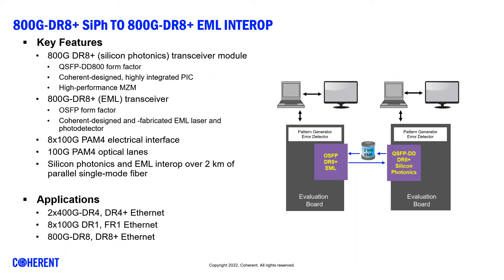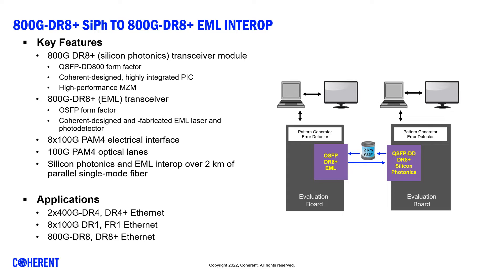This video showcases a live technology interop demonstration of 800G pluggable transceiver modules. The emergence of 800G modules based on eight lanes of 100G PAM4 electrical and 100G PAM4 optical are critical to support the deployment of 25 and 51 terabit switches in optical communication networks.